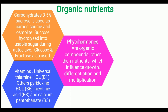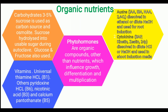Phytohormones are organic compounds other than nutrients which influence the growth, differentiation, and multiplication of plant cells and organs. The most commonly used phytohormones are auxins and cytokinins. Examples of auxins are IAA (Indole Acetic Acid), IBA (Indole Butyric Acid), NAA (Naphthalene Acetic Acid), and 2,4-D. Generally these auxins are prepared at PPM level and dissolved in ethanol or diluted in mild NaOH solution for preparation of stock solutions.